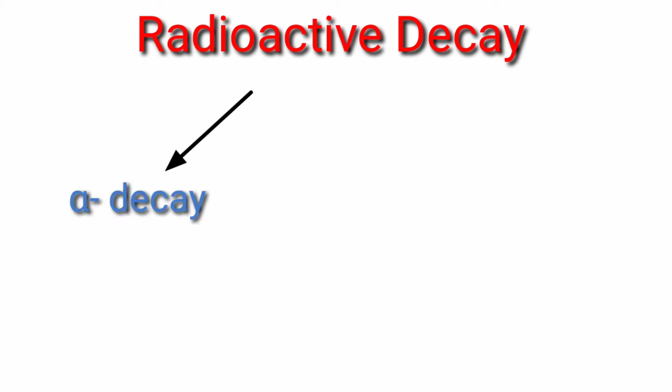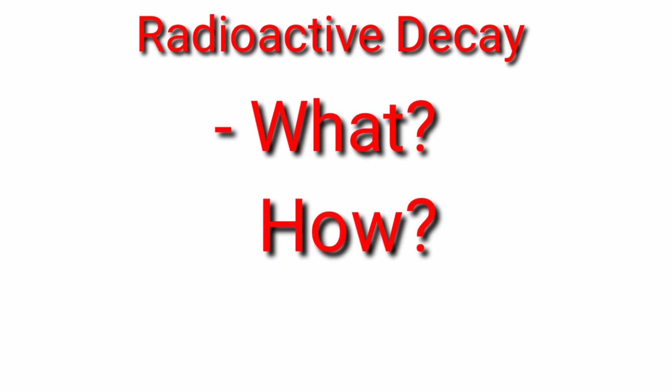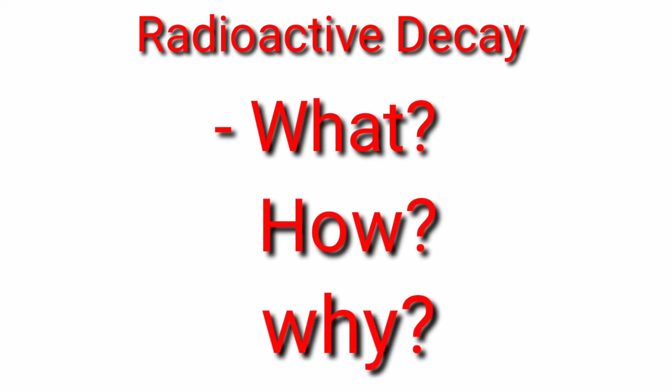There are broadly three kinds of radioactive decay: alpha decay, beta decay, and gamma decay. In this video we will discuss in detail what these decays are, how they occur, and why they occur in the nuclei. First is alpha decay.